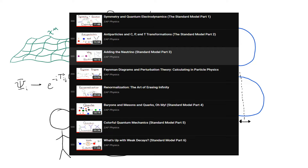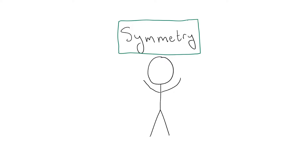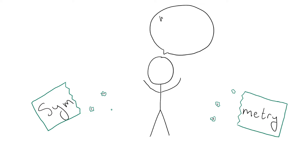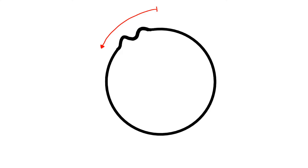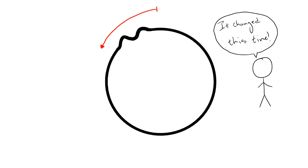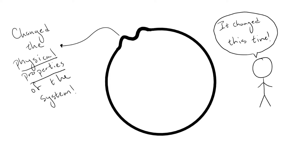However, just as interesting, if not more, than symmetries themselves is what happens when a symmetry is broken. What exactly does it mean for a symmetry to be broken? We can see one example of this by considering a circle, which is symmetric under any rotations about its center, in that if we make any such rotation, the circle will look the same. Now, if we make some deformation to the circle, it will no longer have the symmetry. Such a case where we change the physical properties of the system so that a symmetry no longer exists is known as explicit symmetry breaking.